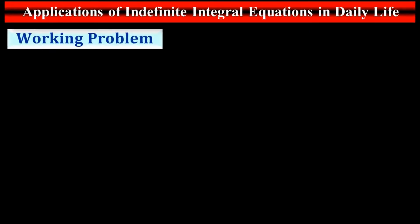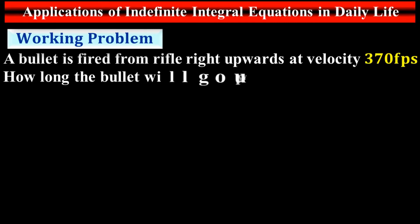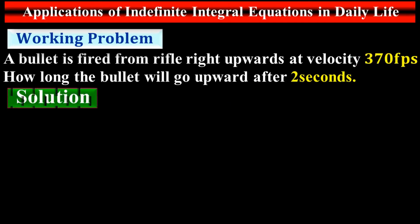Working problem: A bullet is fired from a rifle straight upward at a velocity of 370 feet per second. How far will the bullet travel upward after 2 seconds? The bullet is fired with an initial velocity of 370 feet per second. We need to find the displacement of the bullet after 2 seconds. Let's calculate.